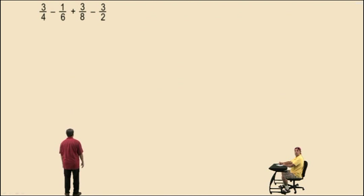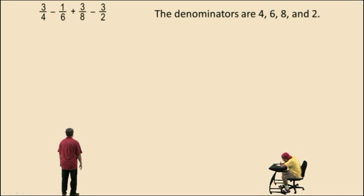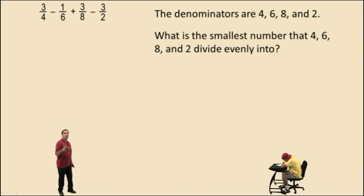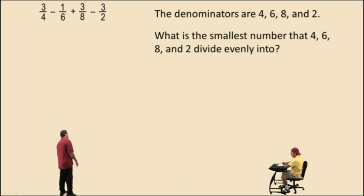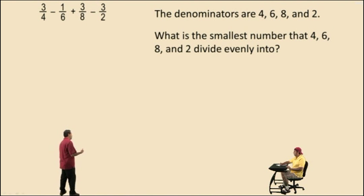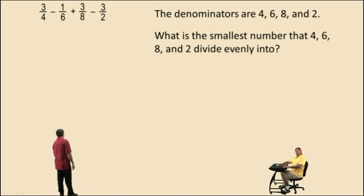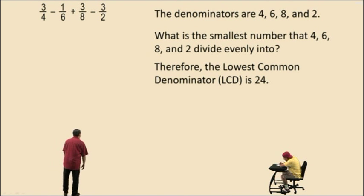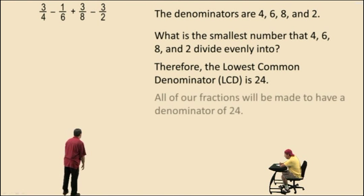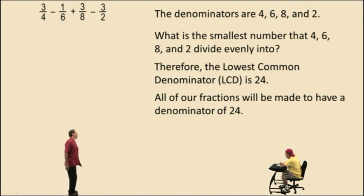Now let's look at these fractions: 3 fourths subtract 1 sixth plus 3 eighths subtract 3 halves. Don't get scared. Our denominators are 4, 6, 8, and 2. What is the smallest number that 4, 6, 8, and 2 divide evenly into? Start with our largest denominator, 8, and see if the others divide evenly into it. They don't. So let's try 8 plus 8, which is 16. Does 16 work? No, because 6 will not divide into 16. So let's try 8 plus 8 plus 8, which is 24. Does 24 work? Yes, it does. Therefore, the lowest common denominator is 24, because 24 is the smallest number that all your denominators divide evenly into.